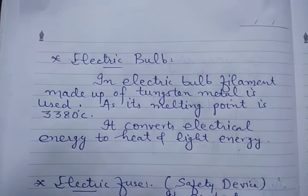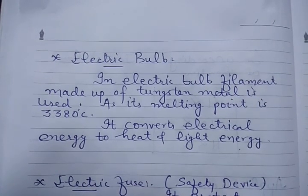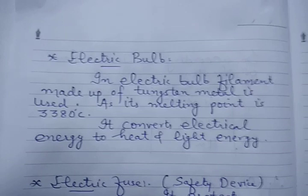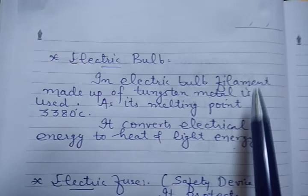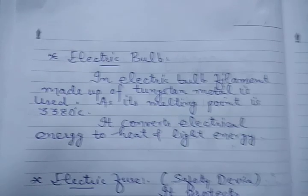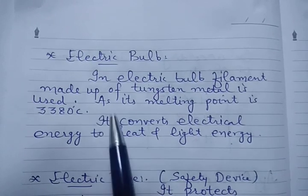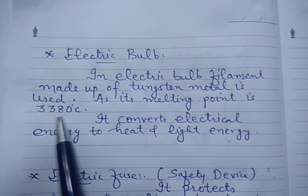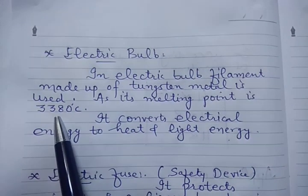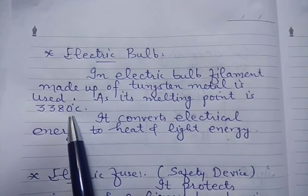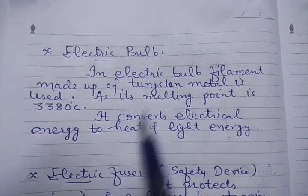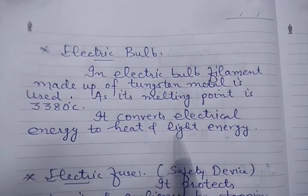The second most important application of Joule's law of heating is the electrical bulb. In an electrical bulb, a filament is there that is made up of tungsten metal. Why is it used? Because its melting point is very high, that is 3380 degrees Celsius. So it converts electrical energy to heat and light energy.